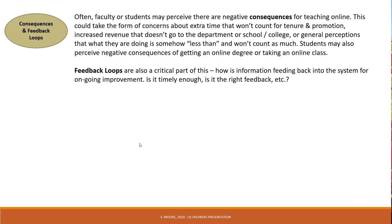Consequences and feedback loops operate subtly in the background. Teachers and maybe even students may feel there are negative consequences for teaching online — that somehow they're being penalized. For example, in higher ed, that extra time may not count for tenure and promotion, or they put in extra time that won't translate into any recognition. They may also perceive negative consequences of getting an online degree or taking an online class. As part of this, feedback loops — how is information feeding back into the system for ongoing improvement? Is it timely, is it the right type, and are the right people getting it in a way that helps them act on it?